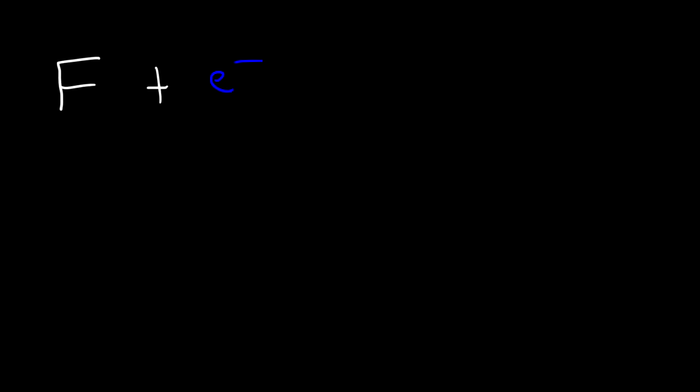Fluorine has a strong desire to acquire an electron. Once fluorine is given an electron it's going to acquire a negative charge. The reason why it wants this electron is it wants to fill its outer energy level — it wants to satisfy the octet rule. So fluorine is electronegative.